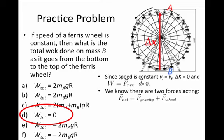In this example, the displacement vector Δx points upward from the bottom to the top of the ferris wheel. Since gravity points downward, the force of gravity dotted into the displacement vector is negative, whereas the force of the ferris wheel dotted into the displacement vector is positive.